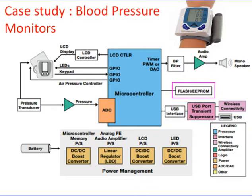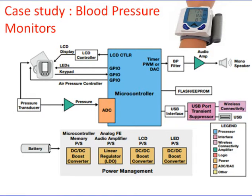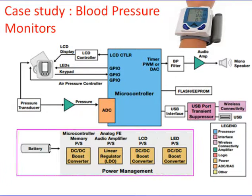Measurement results are stored in EEPROM or flash memory as a data log that can be uploaded to a PC via USB or wireless connection. The analog circuit is used to amplify both DC and AC components of the output signal of pressure transducers so that the MCU can process the signal and obtain useful information about the patient's health. Power management converts input power from alkaline or rechargeable batteries to run various functional blocks.